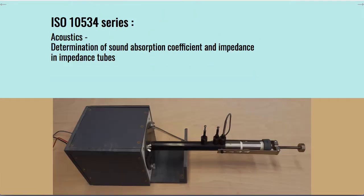The ISO 10534 series is about the determination of the sound absorption coefficient and impedance in impedance tubes. For all impedance tubes, there is always a loudspeaker somewhere on the left and the porous sample somewhere on the right inside the tube. We can see a microphone and some kind of piston here.